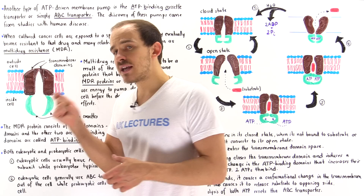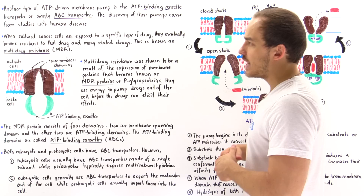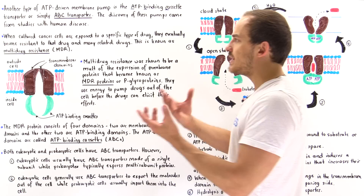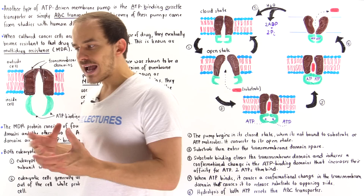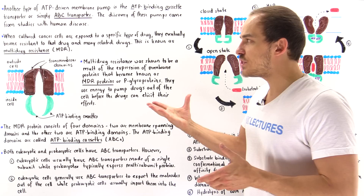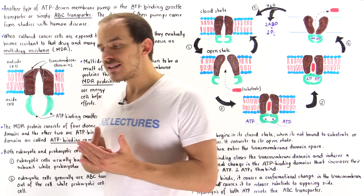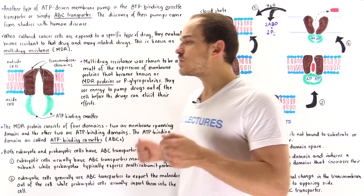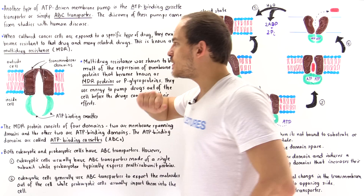Multi-drug resistance means the cancer cells gained the ability to resist not only that particular drug being used, but also closely related drugs — the ability to resist many different types of drugs. The question was: what exactly allowed these cancer cells to gain multi-drug resistance? It turned out the cancer cells began expressing a specific membrane protein that used ATP to drive drug molecules out of the cell before the drugs could elicit their effects.